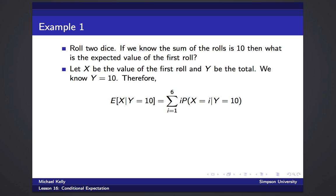So if x is the value of the first roll and y is the total, we're looking for the expected value of x given that the total is 10 of the two rolls, which would be the sum from 1 to 6 of i times the probability x is i given that y is 10.